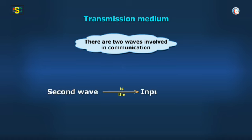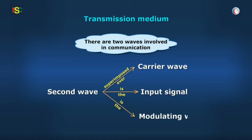The second wave is the input signal itself, which is superimposed over the carrier wave and then transmitted towards the receiver. This input signal is known as the modulating wave.